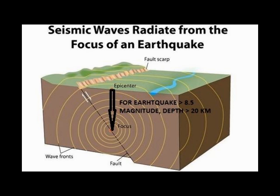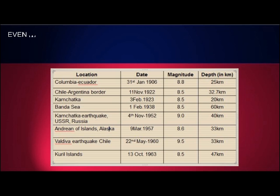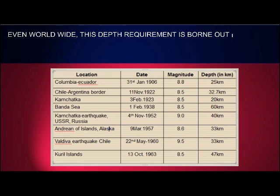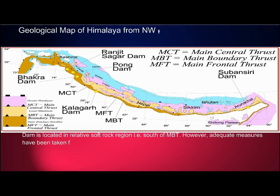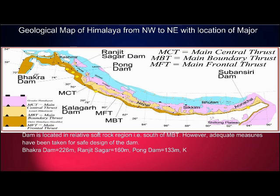Hence it can be safely concluded that an earthquake of 8.5 magnitude cannot occur at a shallow depth of merely 10 kilometers, because such depth cannot sustain the large stress accumulations and may release energy much earlier in terms of lower magnitude. The large sandstone dam is located in a relatively soft rock region, that is, south of the Main Boundary Thrust (MBT).